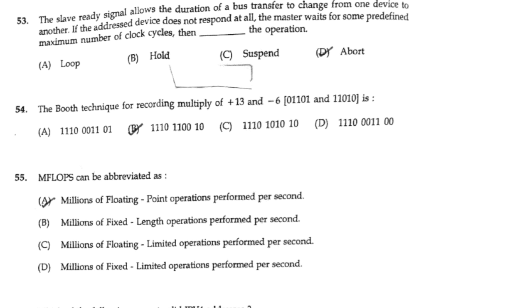The Booth technique for recording multiplication of +13 and -6 is answer option B.